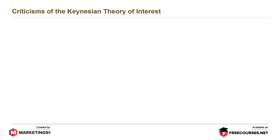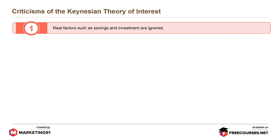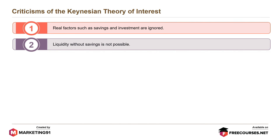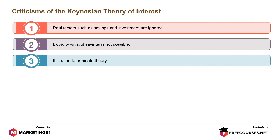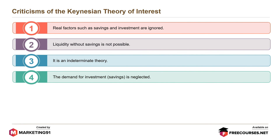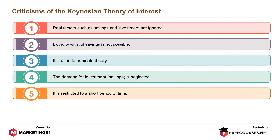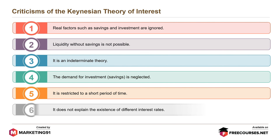Criticisms of the Keynesian theory of interest are: real factors such as savings and investment are ignored; liquidity without savings is not possible; it is an indeterminate theory; the demand for investment or savings is neglected; it is restricted to a short period of time; and it does not explain the existence of different interest rates.